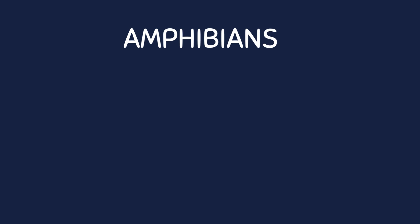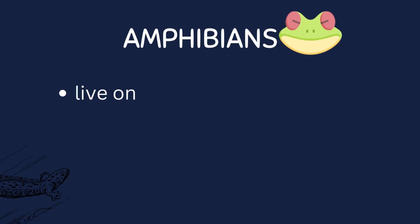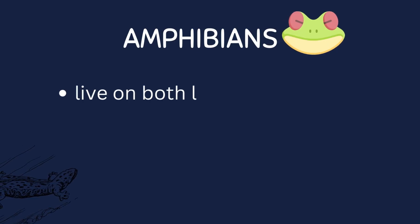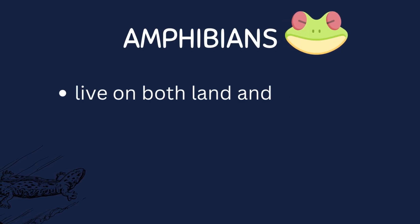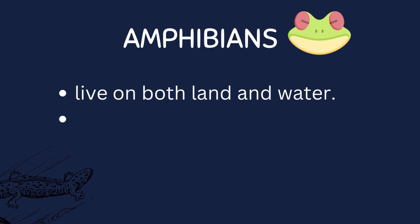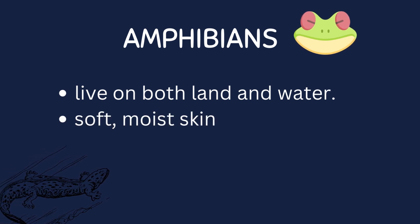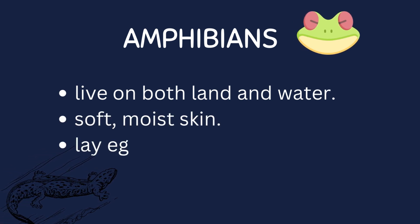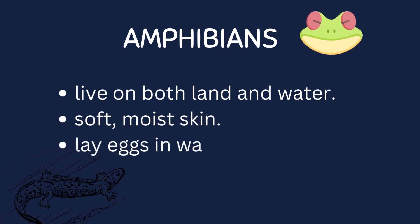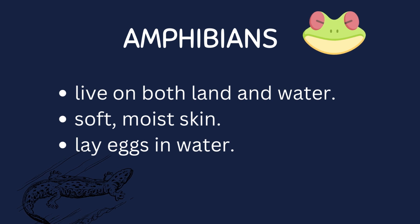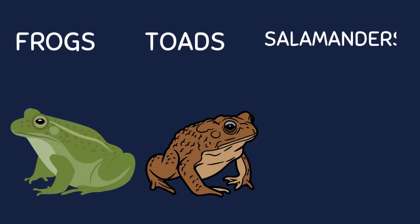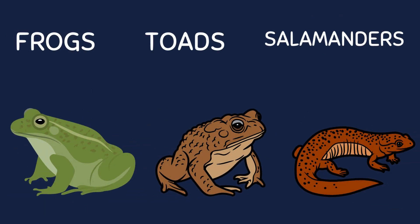Amphibians are a group of animals that can live on both land and water. They have soft, moist skin and lay eggs in water. Frogs, toads, and salamanders are examples of amphibians.